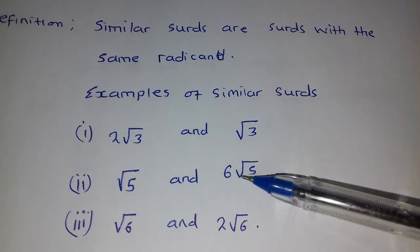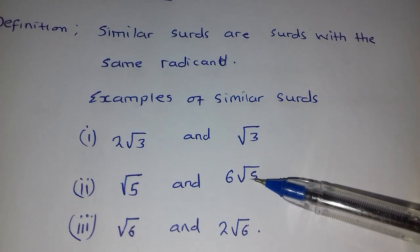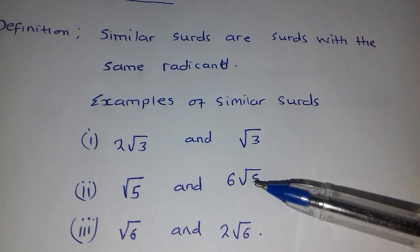Root 5 and 6 root 5, despite them having different coefficients, the radicand is the same, so these two are similar surds.